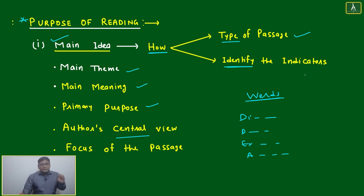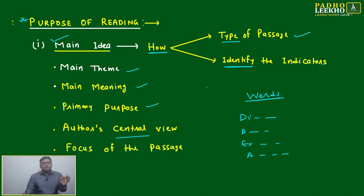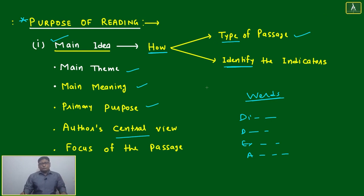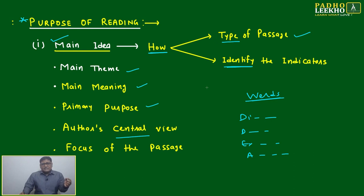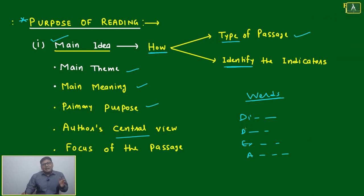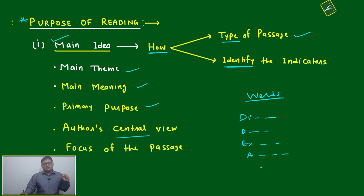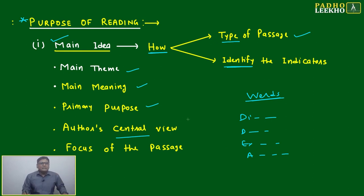Next, identify the indicators in the passage. For example, 'this experiment suggests' — it is giving a suggestion, not enforcing or challenging any established truth. Suggestion means if you want to take it, take it; if not, don't. Like a friend giving you advice — it is not binding on you. In India we get free suggestions, but implementing them depends on you. All these indicator words have different meanings. Based on the indicator, you choose among the options which one gives a clear-cut idea of the main theme or primary purpose.